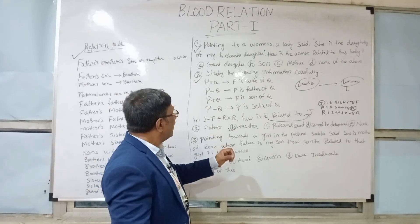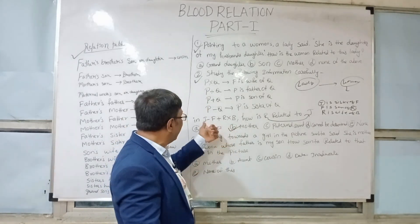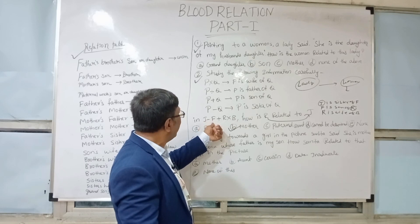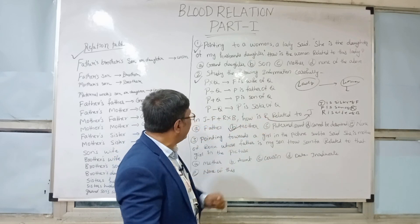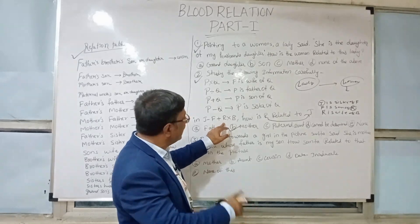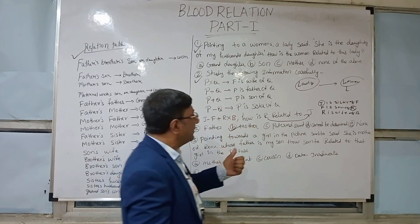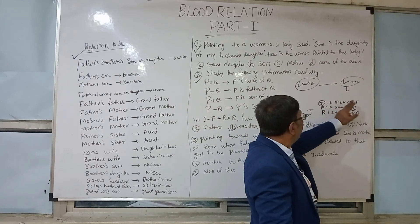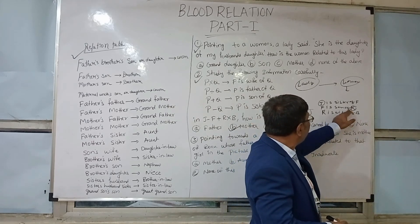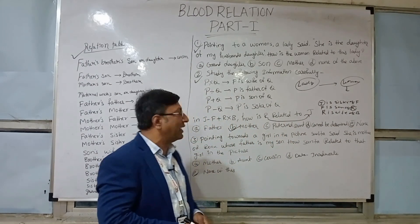For this type of question, you just read carefully. With the help of this information, you will find the correct answer. Here J − F: J is sister of F. F + R: F is son of R. R × B: R is wife of B. So F and J are brother and sister. F is son of R, so J is also daughter of R. So R is the mother of J. Our correct answer is Mother.